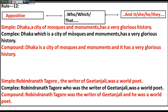Another example: 'Dhaka, a city of mosques and monuments, has a very glorious history.' To make it complex: 'Dhaka, which is a city of mosques and monuments, has a very glorious history' — here 'which is a city of mosques and monuments' is the subordinate clause. For compound: 'Dhaka is a city of mosques and monuments, and it has a very glorious history.' This structure — 'a city of mosques and monuments' — is called an appositive. Similarly, 'the writer of Gitanjali' — you can make it a subordinate clause to make it complex.